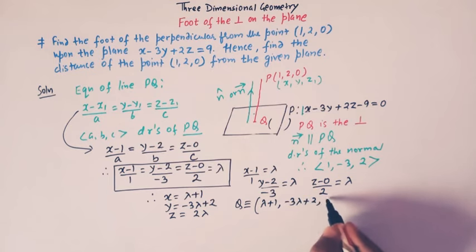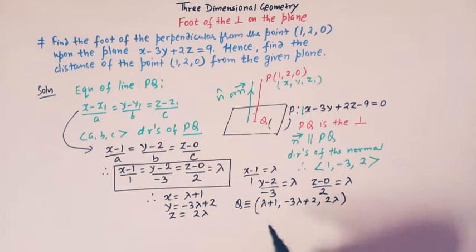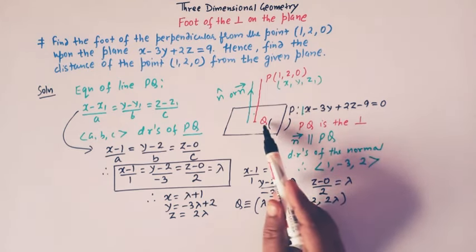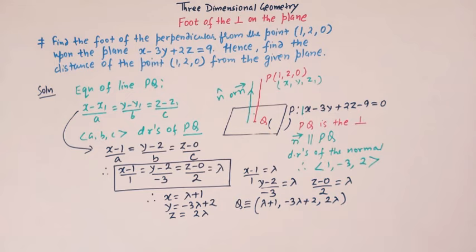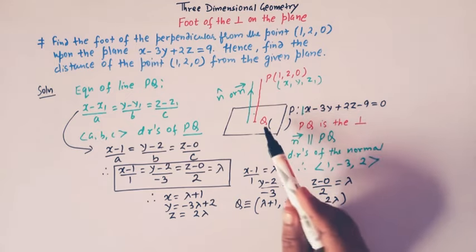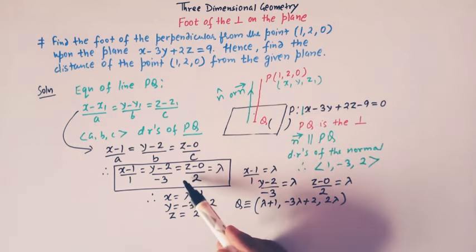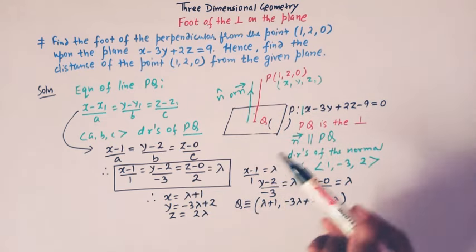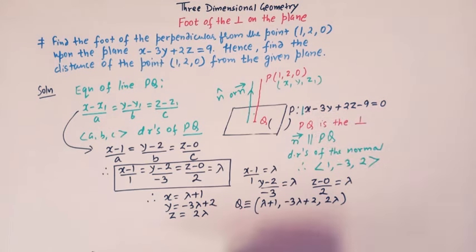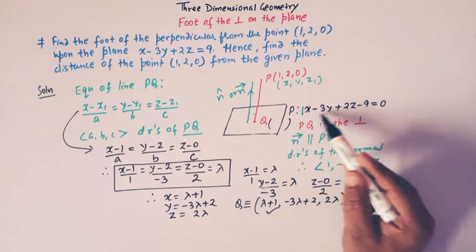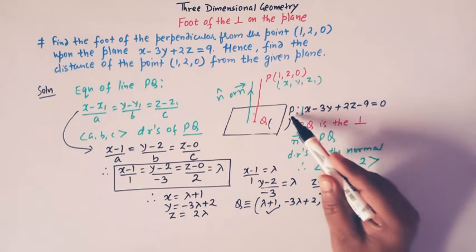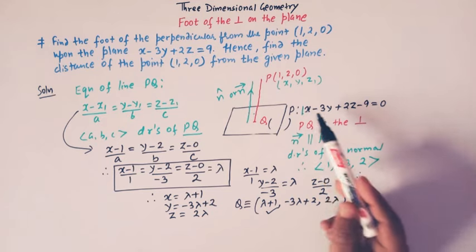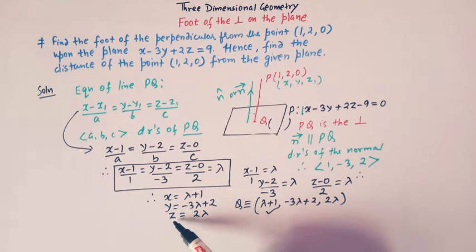So from here we have x = lambda plus 1, y = minus 3 lambda plus 2, and z = 2 lambda. So therefore the coordinates of this point Q are given by these coordinates for some value of lambda. Now we have to find the value of lambda. We see that this point Q lies on the line PQ as well as on the plane P, so therefore these coordinates should satisfy the equation of this plane P. So now we can substitute the values of x, y, z into the equation of the plane.